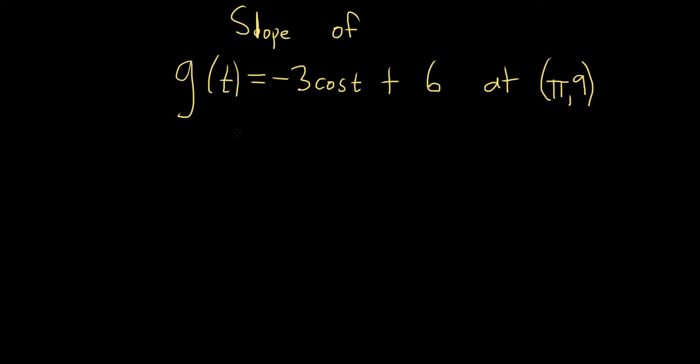So the slope is the derivative, so all we have to do in this problem is find the derivative of g of t and then plug in the value of t. In this case, t is equal to pi.